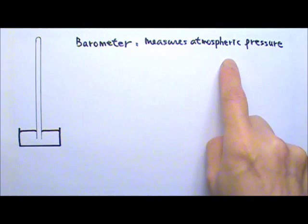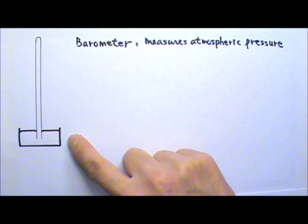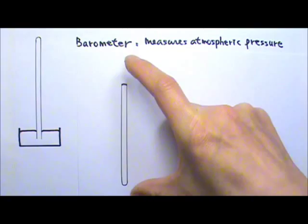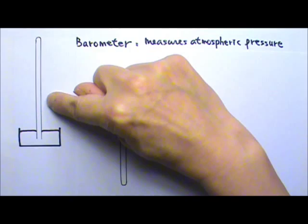A barometer is a device used to measure atmospheric pressure. A classic barometer starts with a tub of mercury. Then you get a long glass tube filled with mercury. You seal the opening, flip the tube over, place it in the tub like this, and remove the seal.